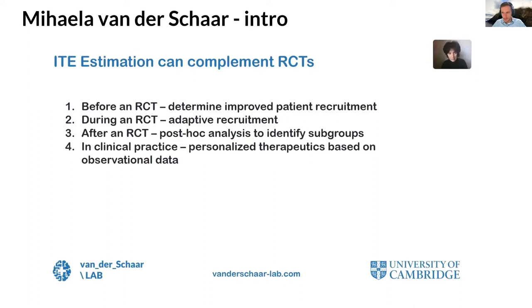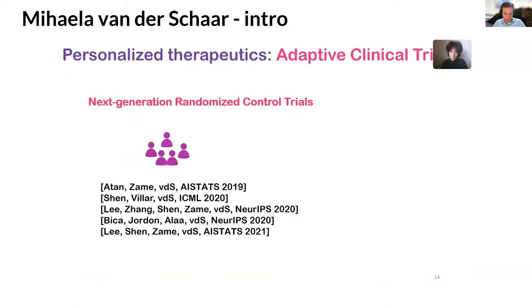During a randomized controlled trial, we can identify which subgroup of patients best responds to a treatment and enroll those patients in subsequent parts of the trial, or look at optimal dosage for different subgroups. After a trial, we can do post-hoc analysis to identify subgroups responding differently to the drug. After a drug or intervention is adopted in clinical practice, we can estimate from observational data what treatment to give to which patient and when. This also relates to adaptive clinical trials — in this tutorial series we won't cover ML in designing next-generation RCTs, but it is an important research topic for our group.